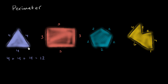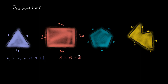Now I encourage you to pause the video and figure out the perimeters of these three figures. It's the exact same idea — we would just add the lengths of the sides. Let's say these distances are in meters. This side is 3 meters, and this is also 3 meters — it's a rectangle. This side is 5 meters, and this is also 5 meters. So the perimeter is going to be 3 plus 5 plus 3 plus 5. That's 3 plus 3 is 6, plus 5 plus 5 is 10, so that equals 16 meters.